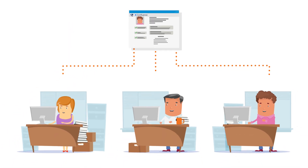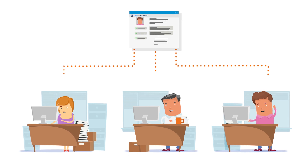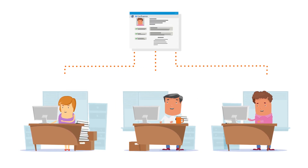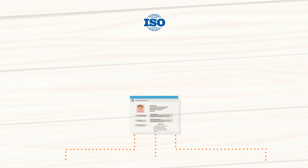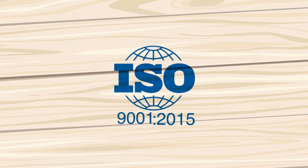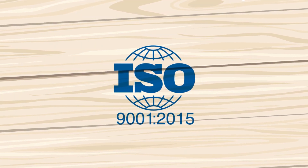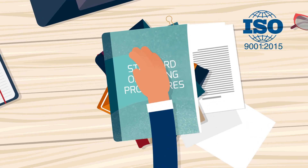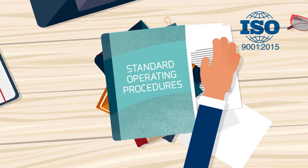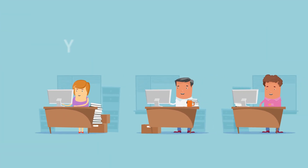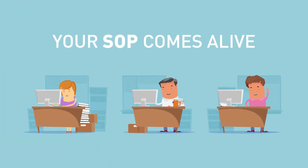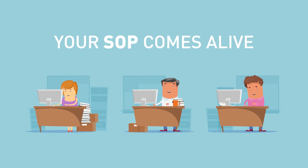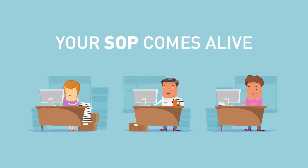The Process Management Suite allows your whole company to work together on your processes and keep them up to date, just like ISO 9001:2015 says you should. No more dust collection on the shelf — your SOP finally comes alive and is actively worked on by everyone in the company, in the place they use every day anyway.